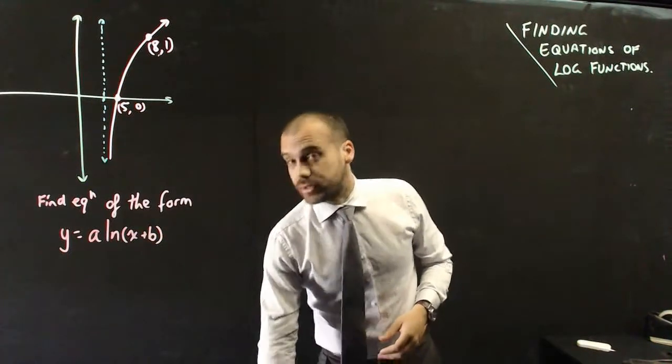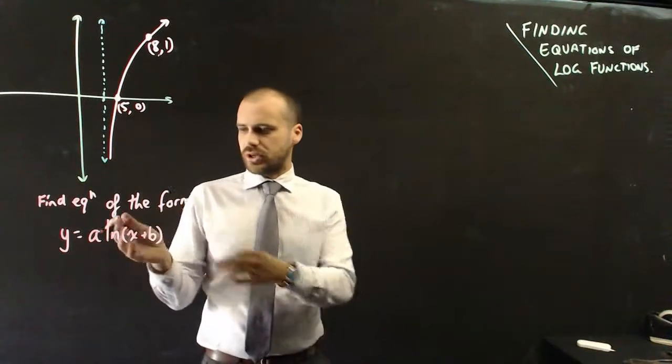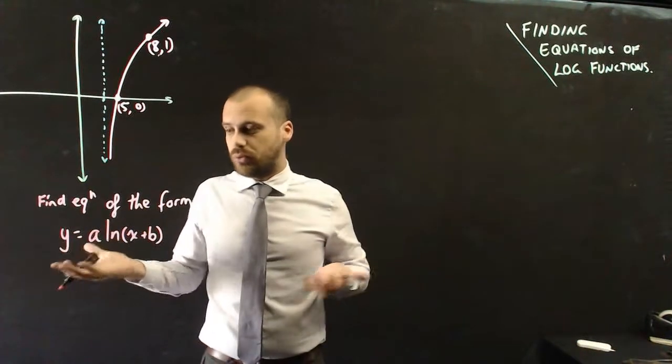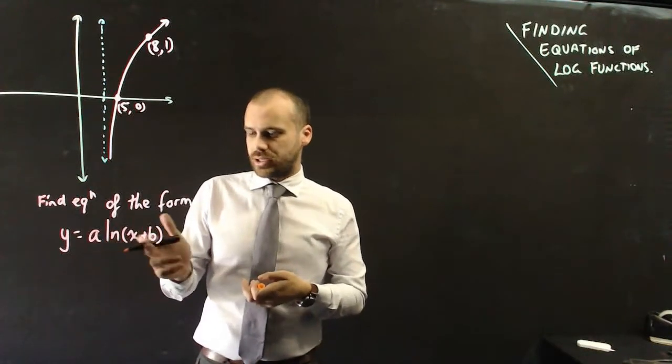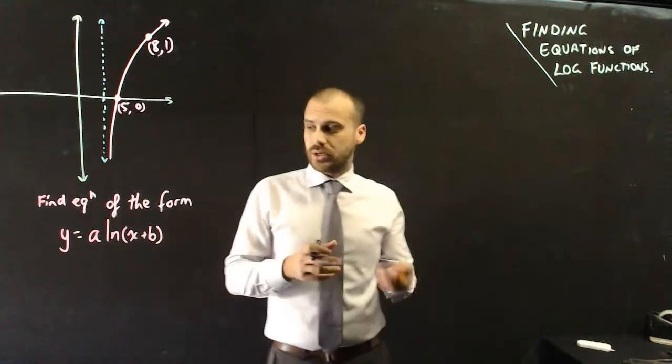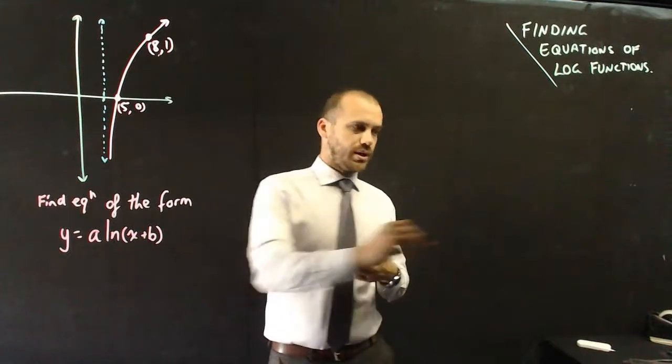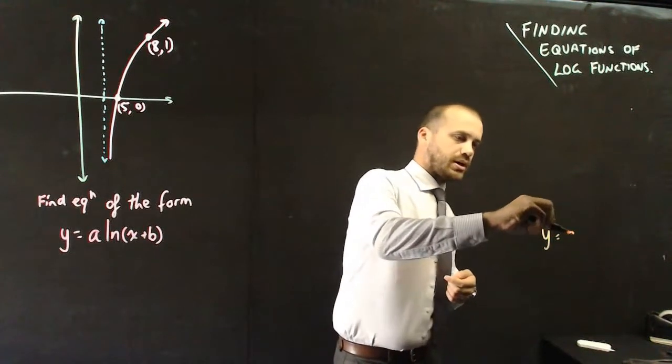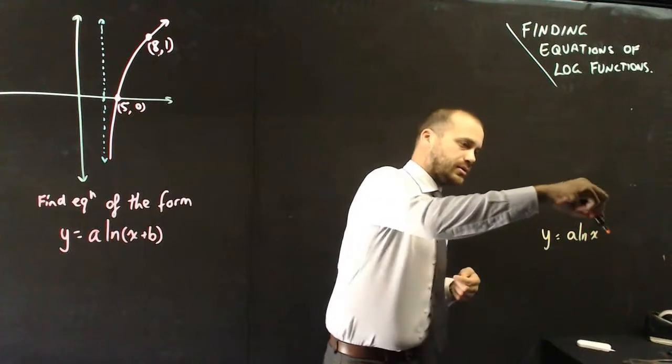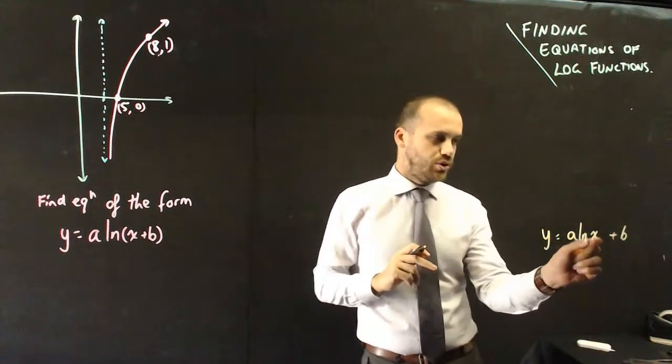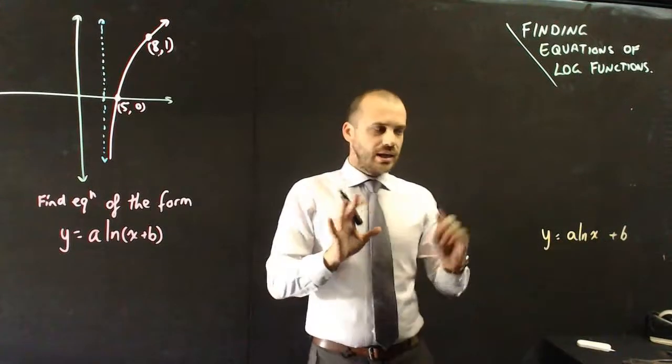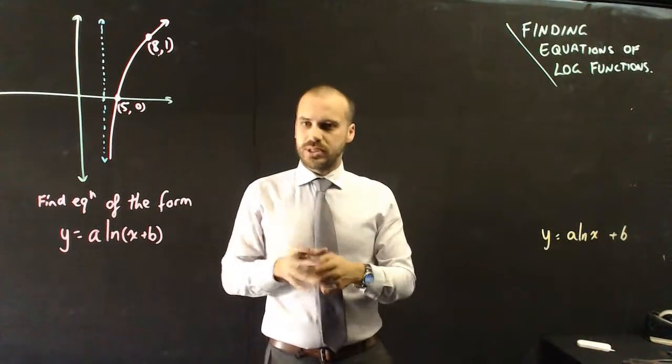Now in a question like this, you're always going to be told that it's of a certain form. So you might be told it's of the form a ln(x+b), or you might be told it's of the form y equals a ln(x+b), with the b not in the brackets. In any case, you're going to be told what form it's in.